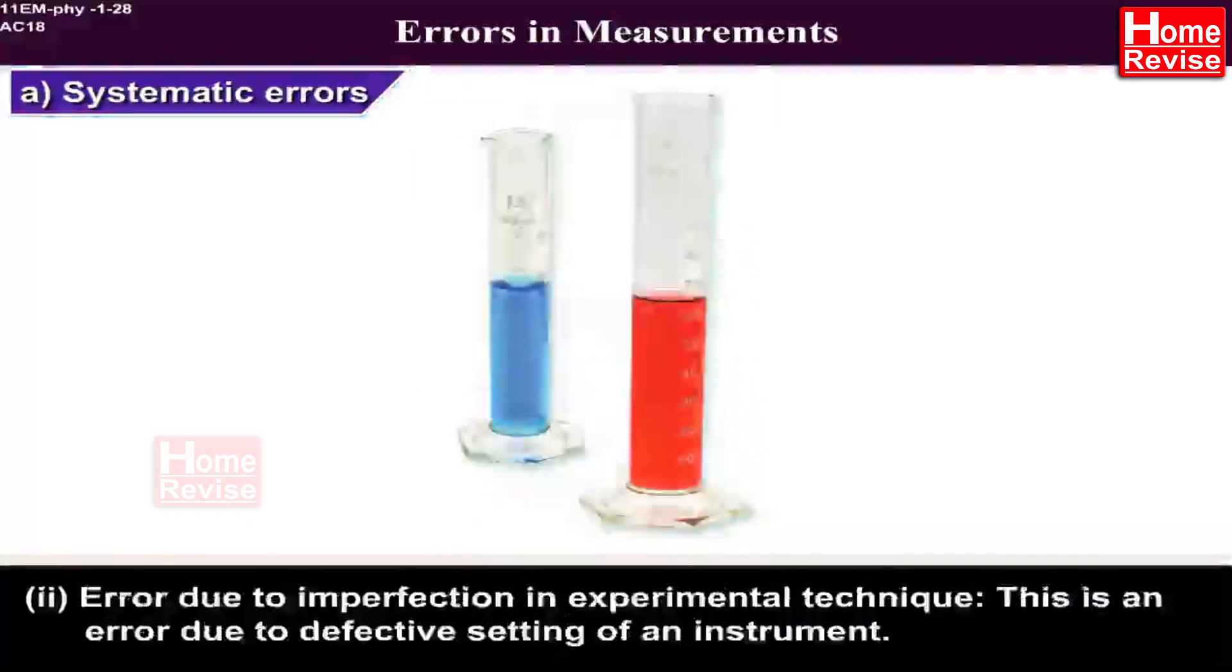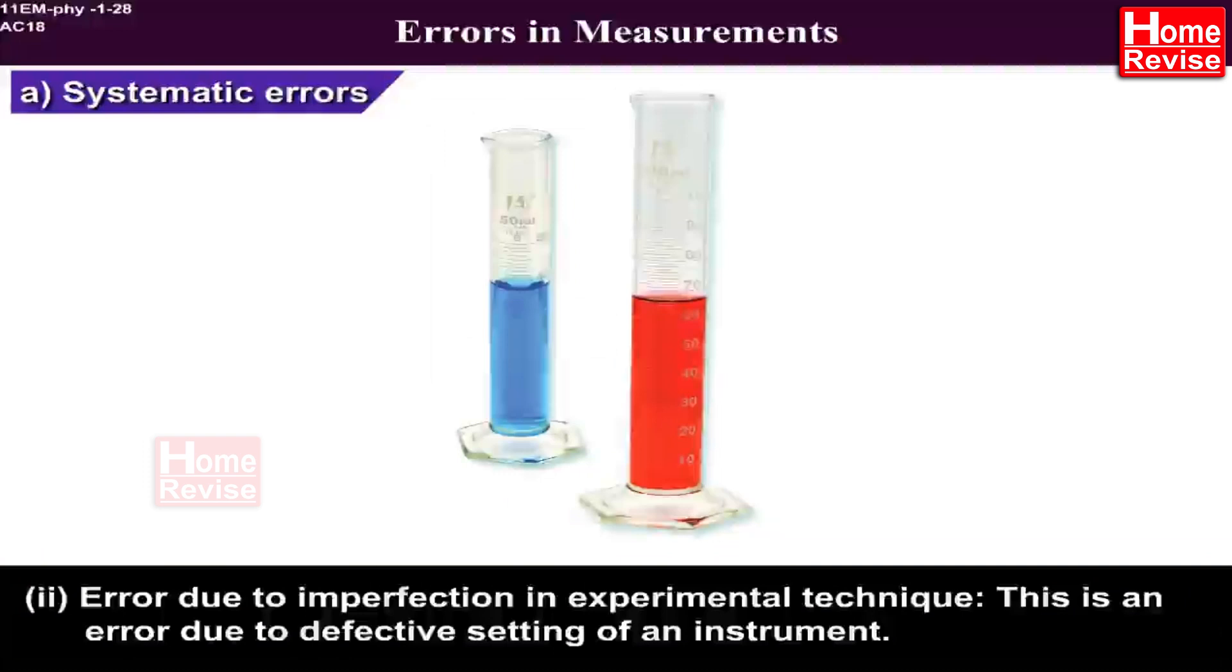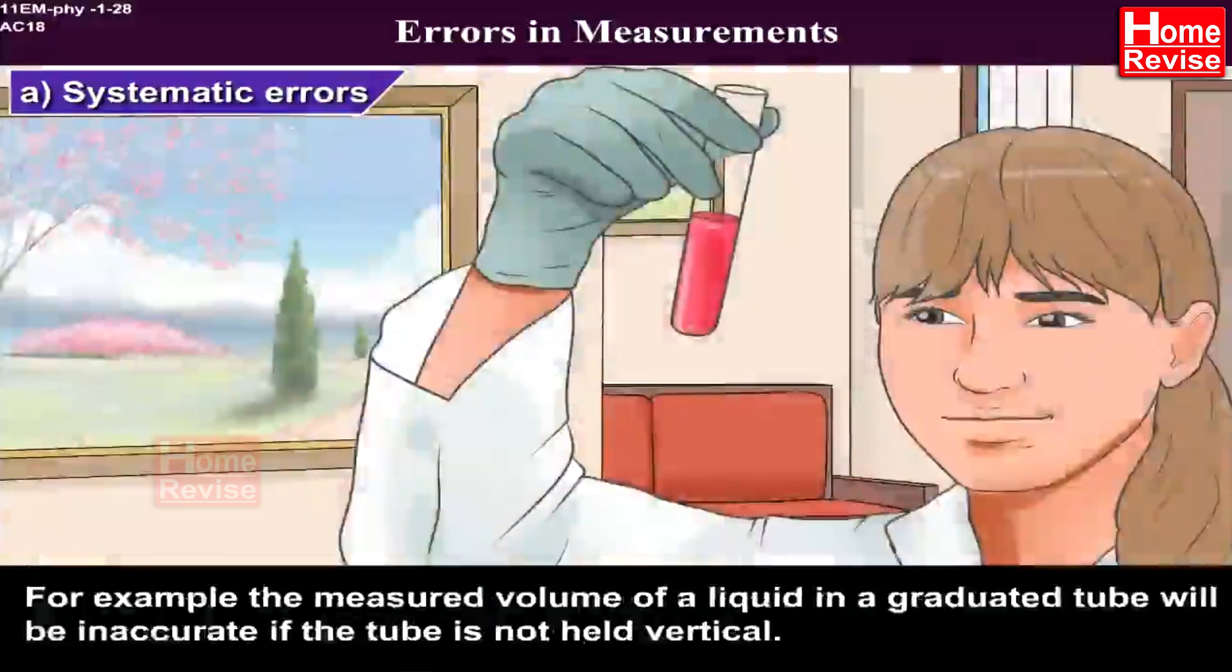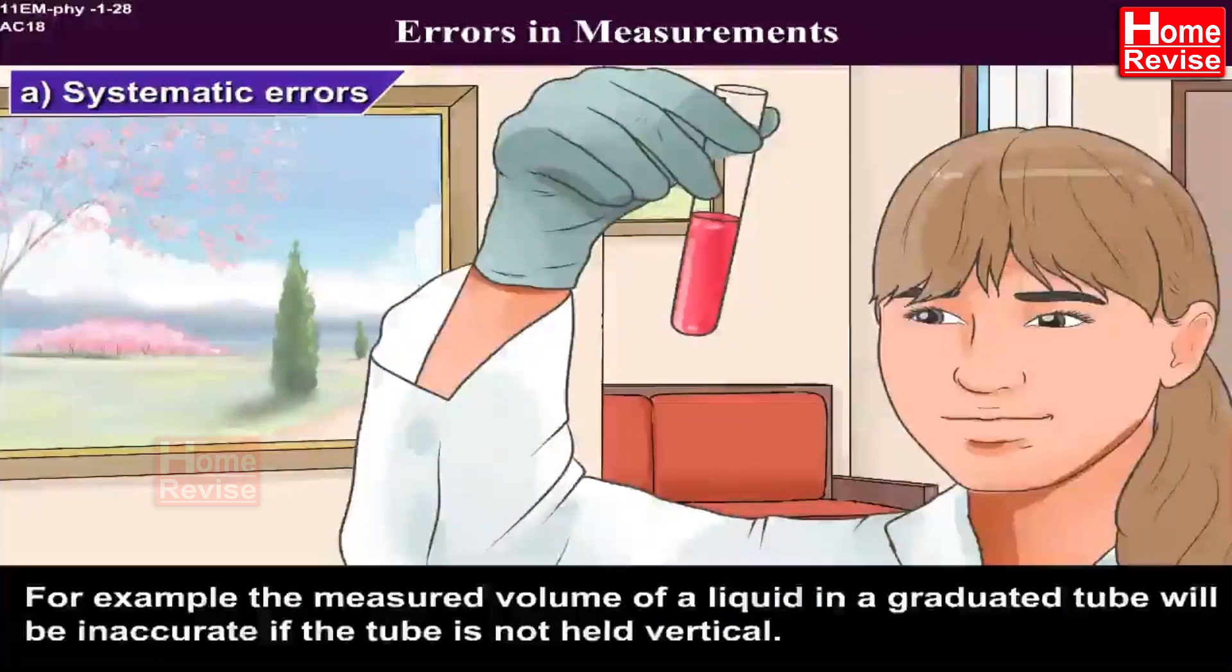Second, error due to imperfection in experimental technique. This is an error due to defective setting of an instrument. For example, the measured volume of a liquid in a graduated tube will be inaccurate if the tube is not held vertical.